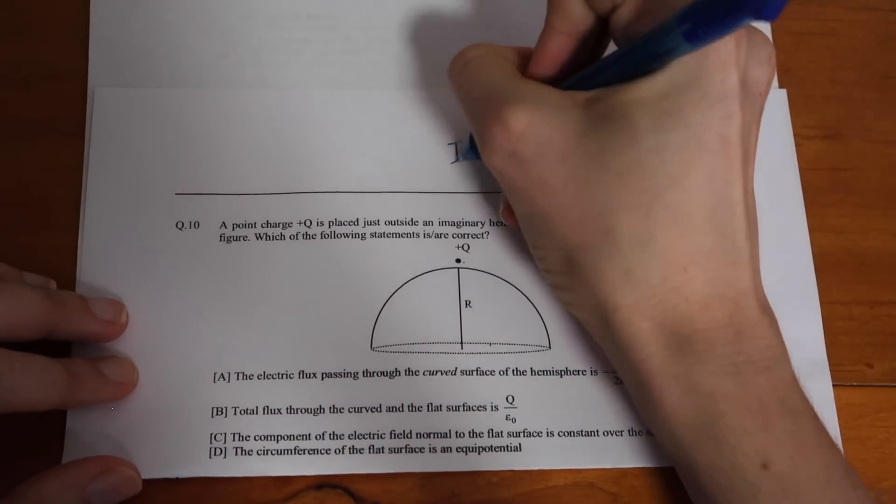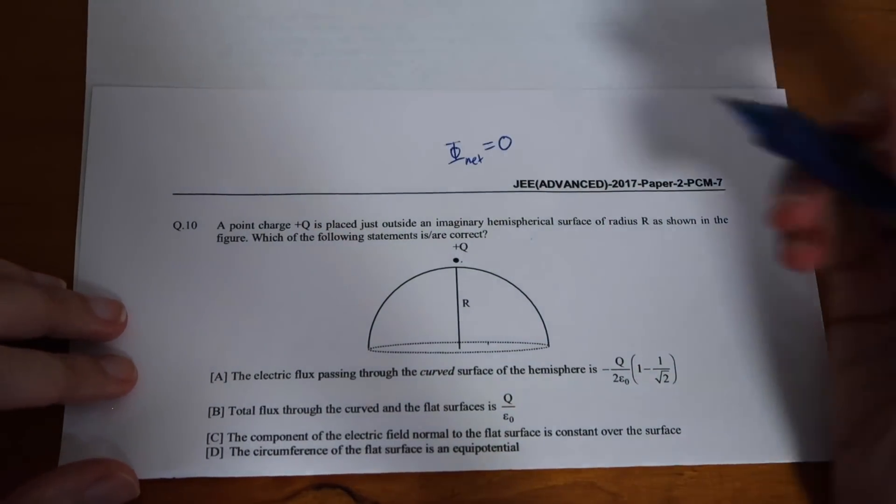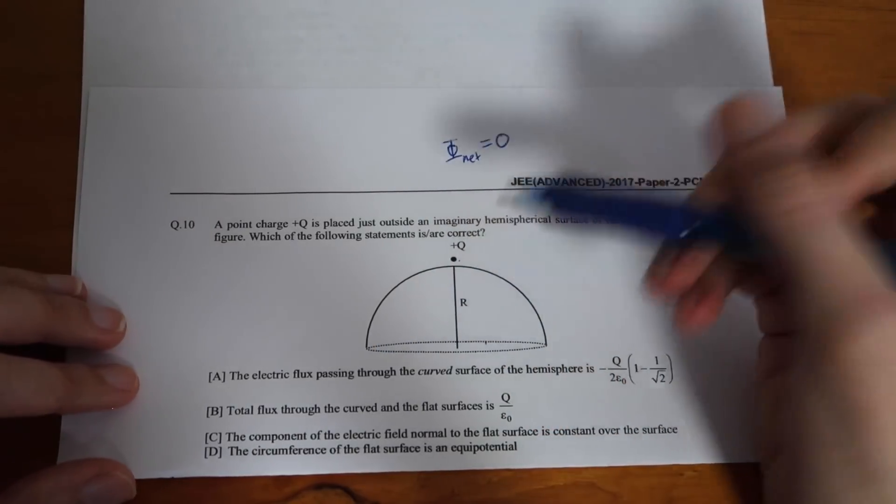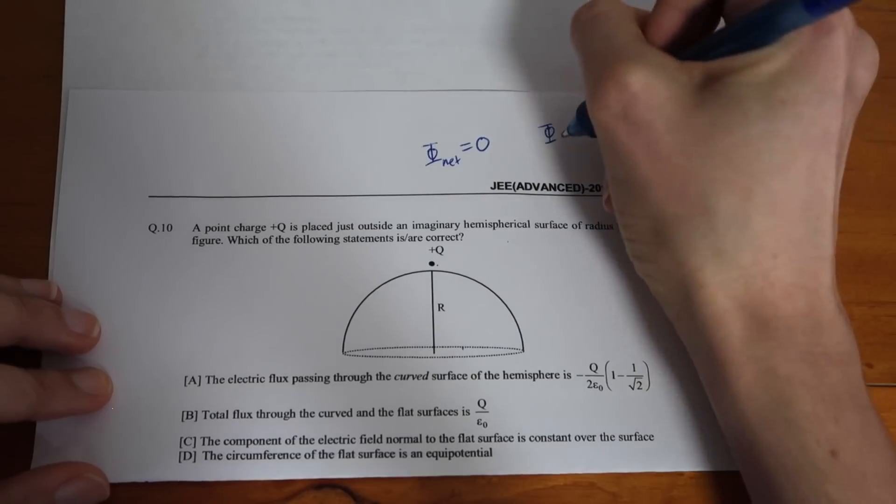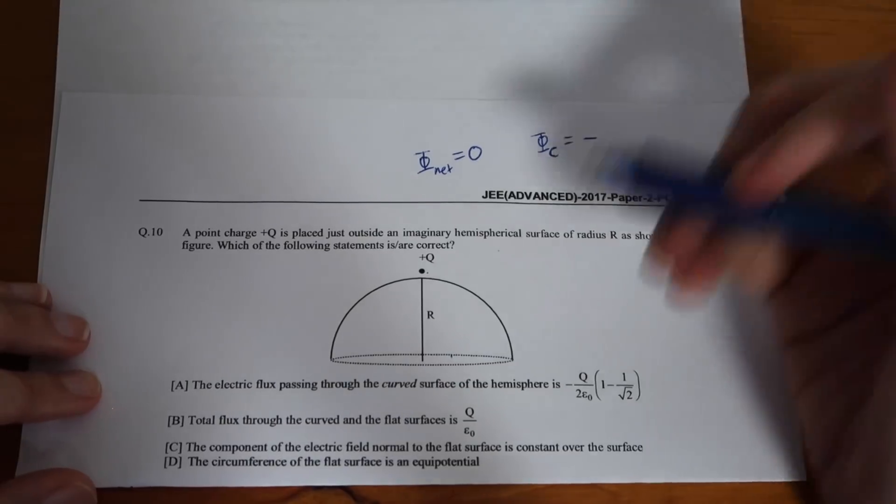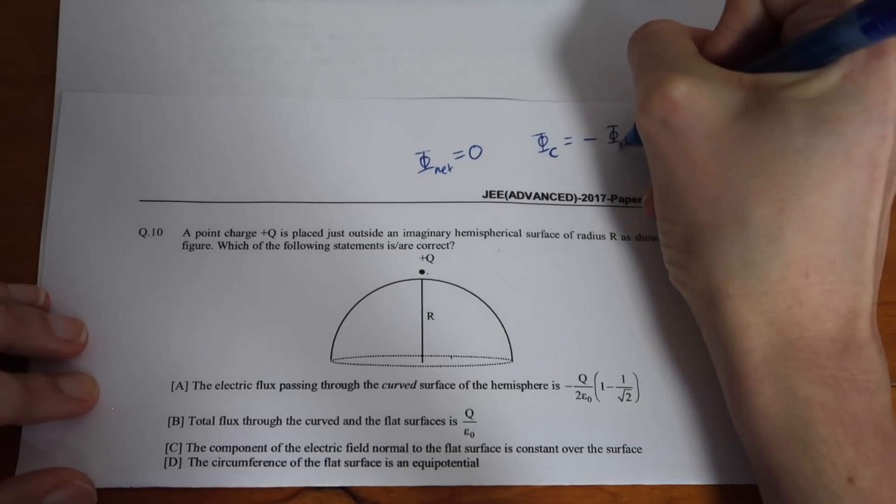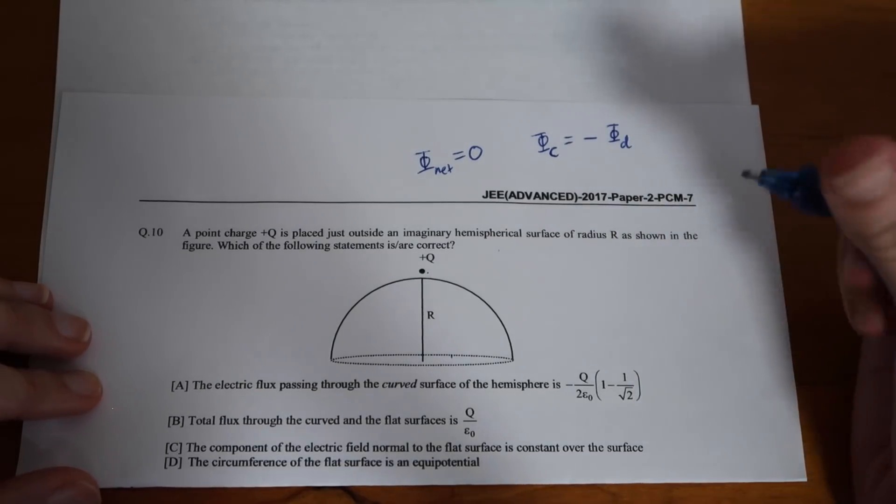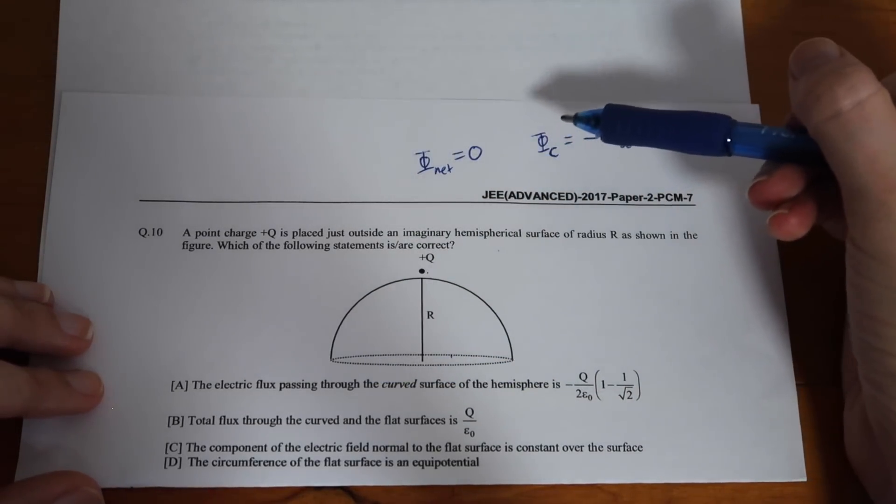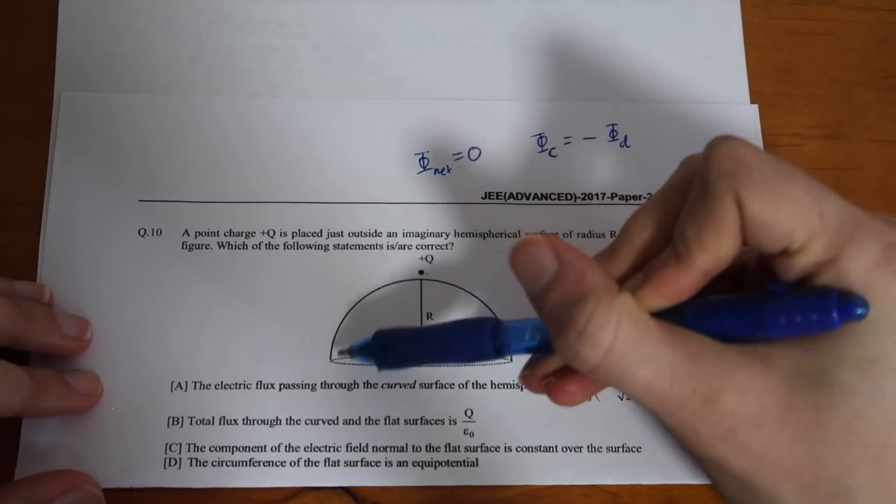Now, one trick that we're going to use to find the electric flux in this problem is to note that because the point charge is actually outside of our surface, the net flux is going to be zero. That's because any flux that enters through the top surface through the curved part is also going to exit out through this disk on the bottom. So, I'll write that down here that the net flux is going to be equal to zero.